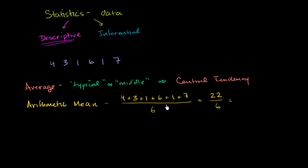And we could write this as a mixed number. 6 goes into 22 three times with the remainder of 4. So it's 3 and 4/6, which is the same thing as 3 and 2/3. We could write this as a decimal with 3.6 repeating. So this is also 3.6 repeating. We could write it any one of those ways. But this is kind of a representative number. This is trying to get at a central tendency.